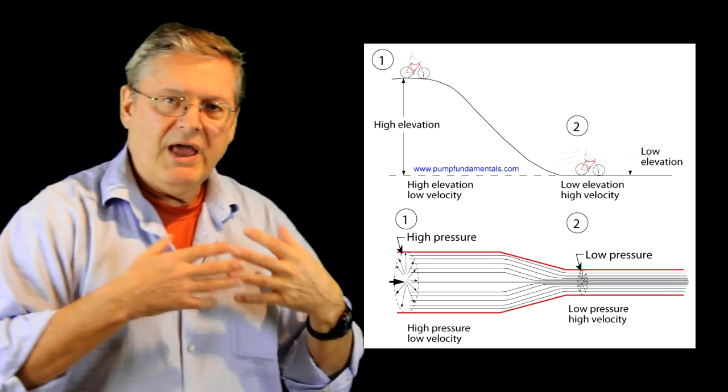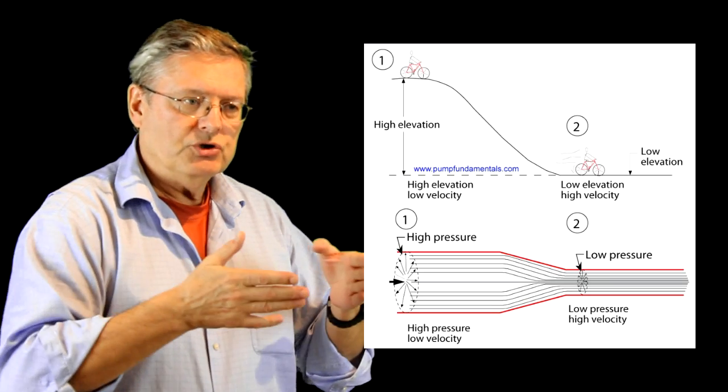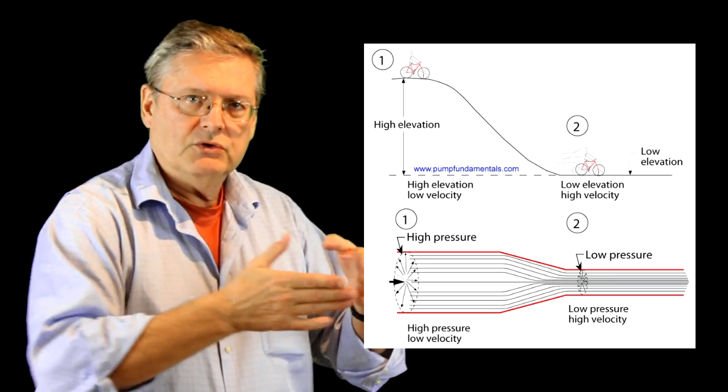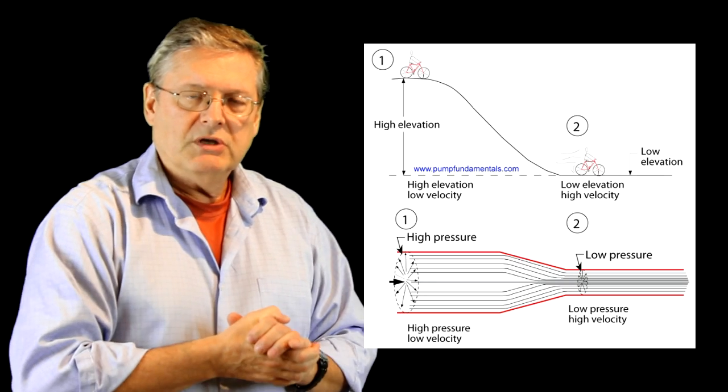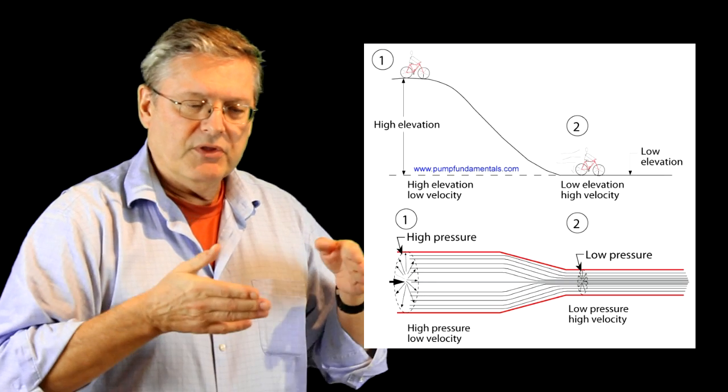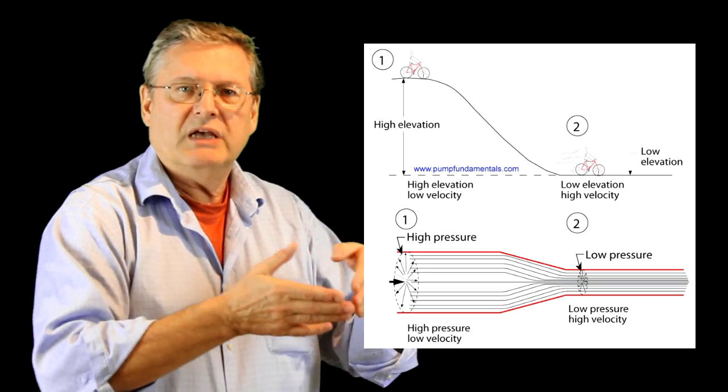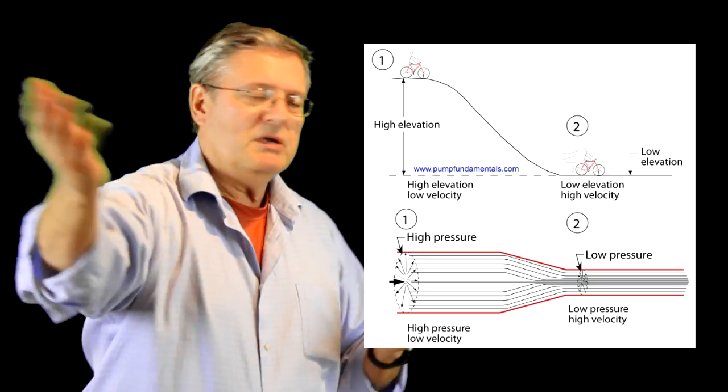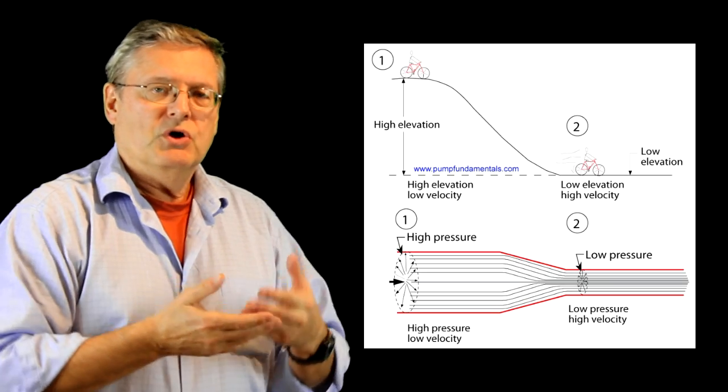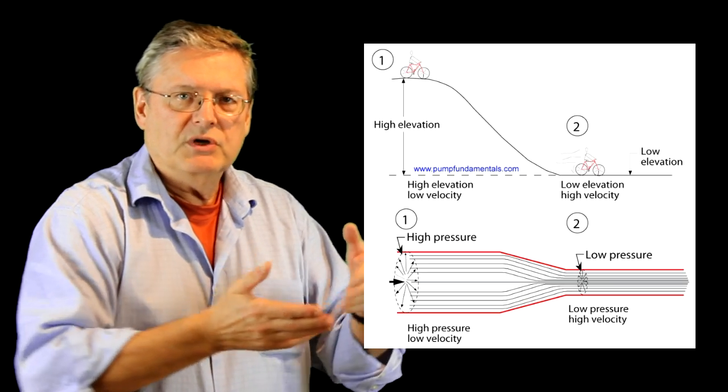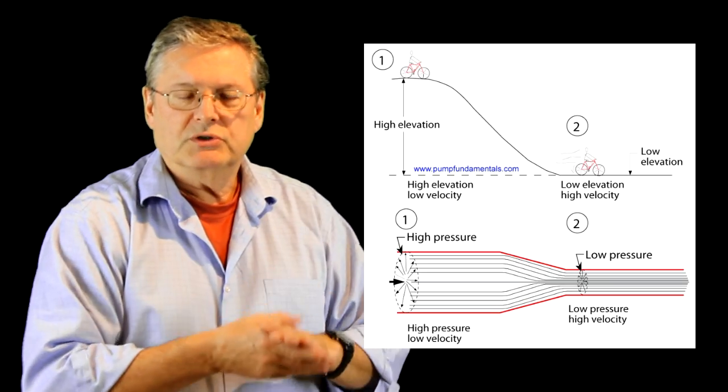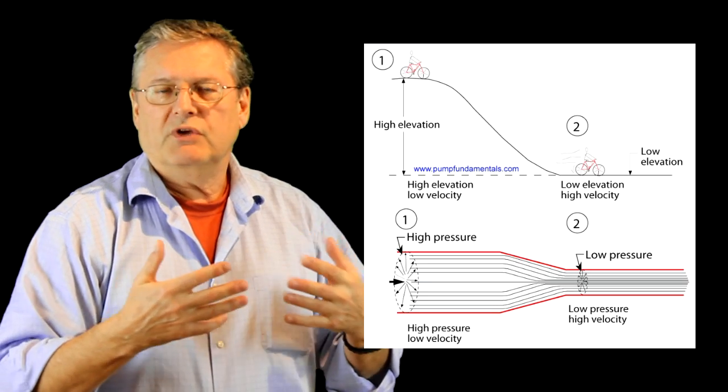What happens in a venturi is that the pressure and the flow is forced into a smaller conduit, so something has got to give. The flow that comes to the smaller cone has to accelerate or go faster because we're pushing the same amount of liquid through there. To compensate for this increase in speed, the pressure goes down. It's a question of conservation of energy.